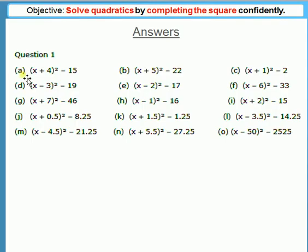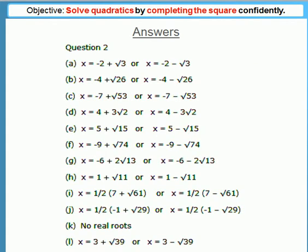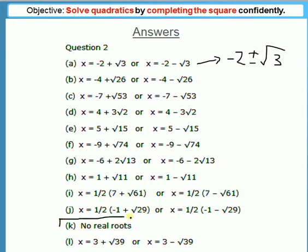For question one, all you need to do is complete the square — you don't need to solve anything, and the answers are shown. For question two, I wanted the two solutions. For example, 2a you could write the answer as −2 ± √3. Notice that for k, because you get a negative under the square root, there are no real roots — that's something discussed in more detail in IB.